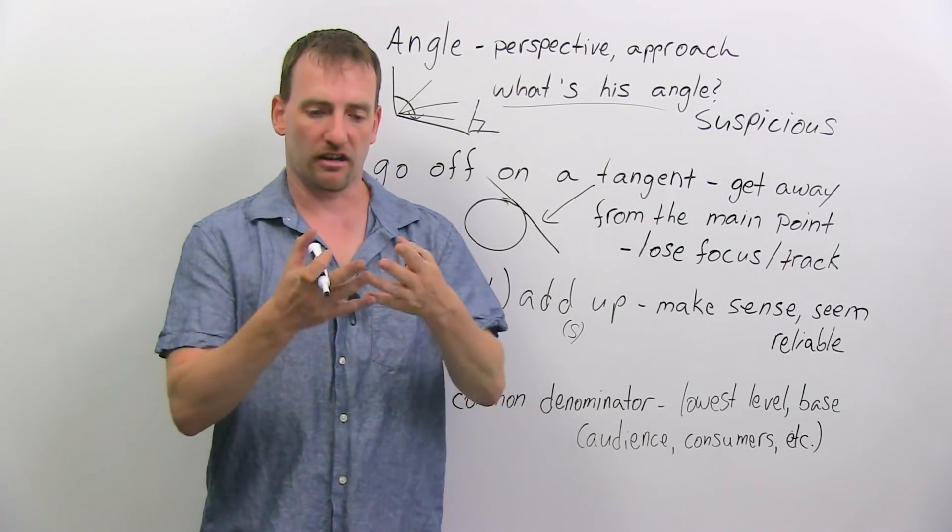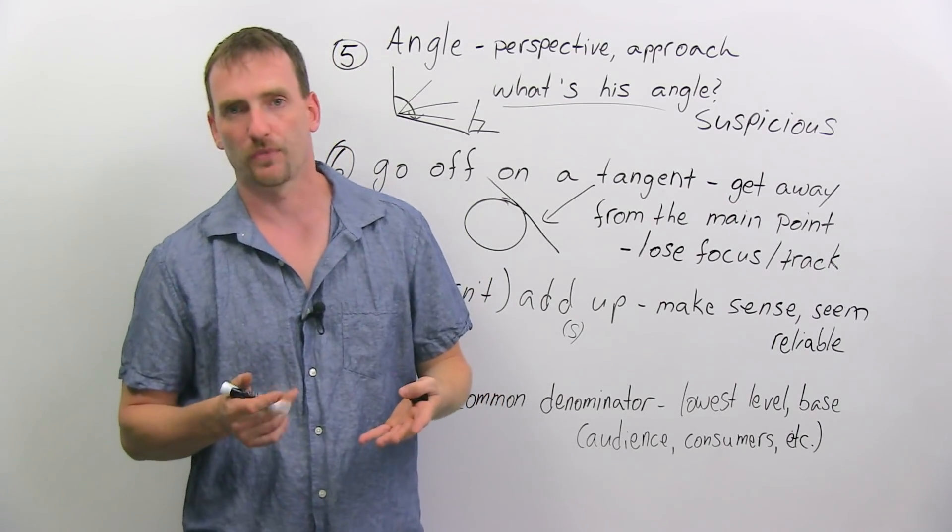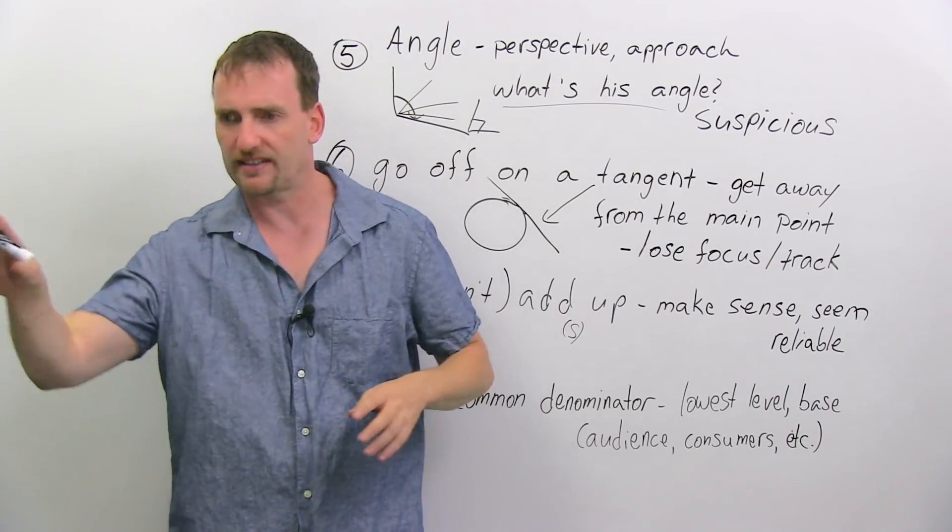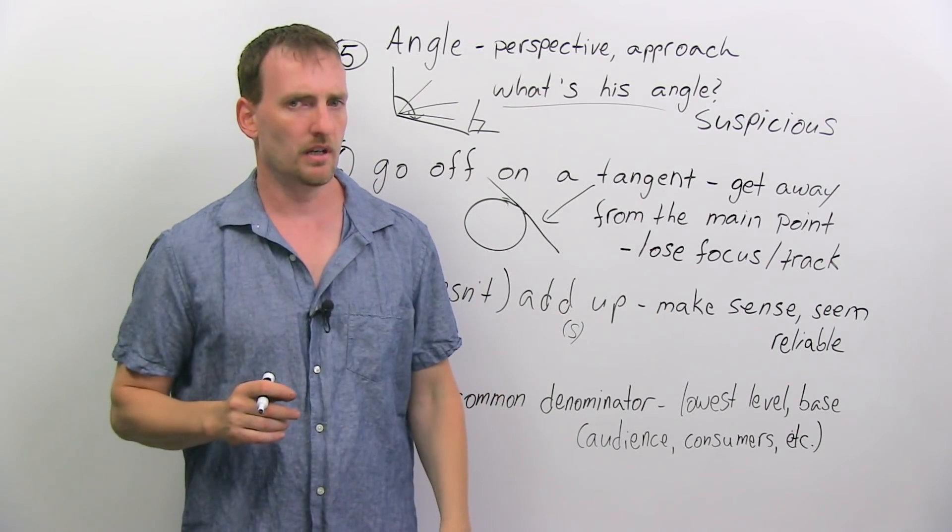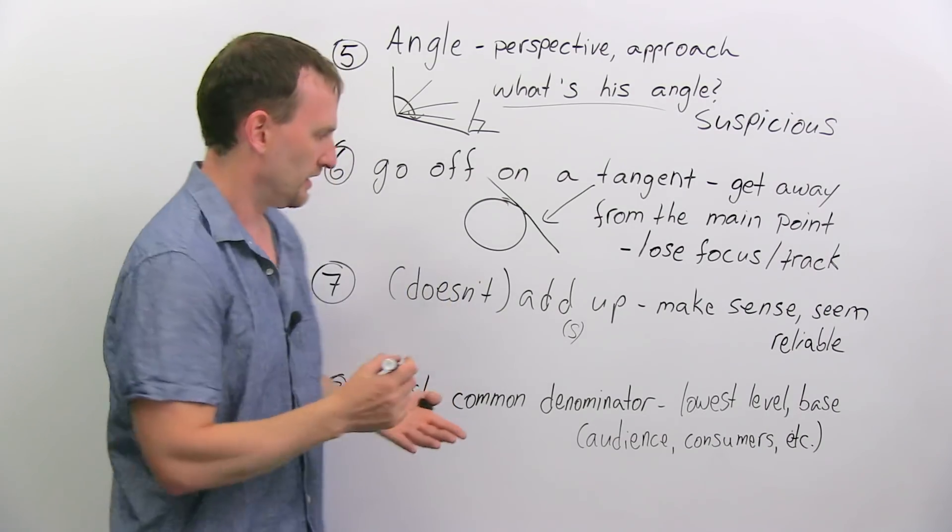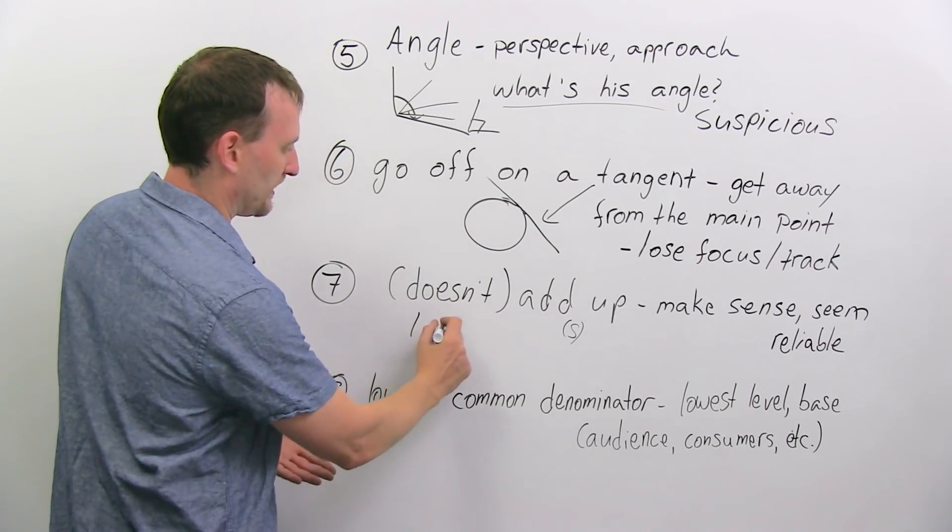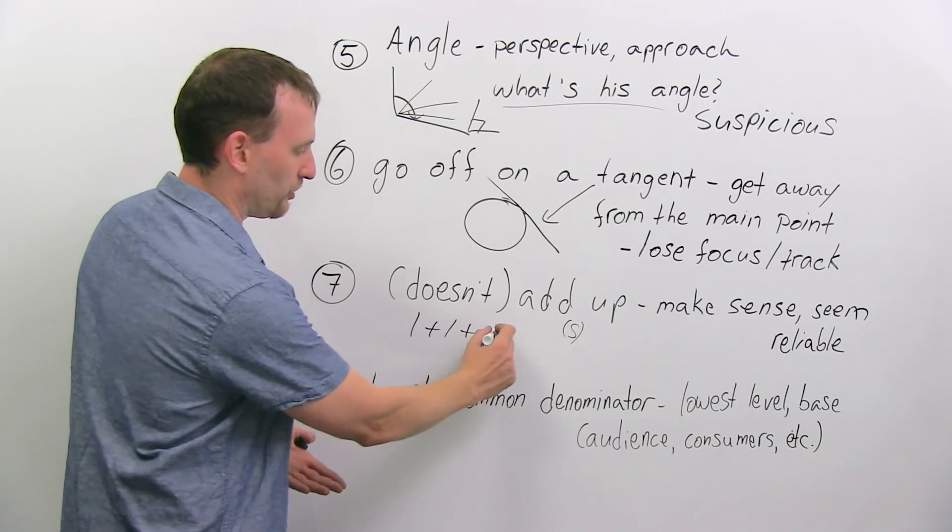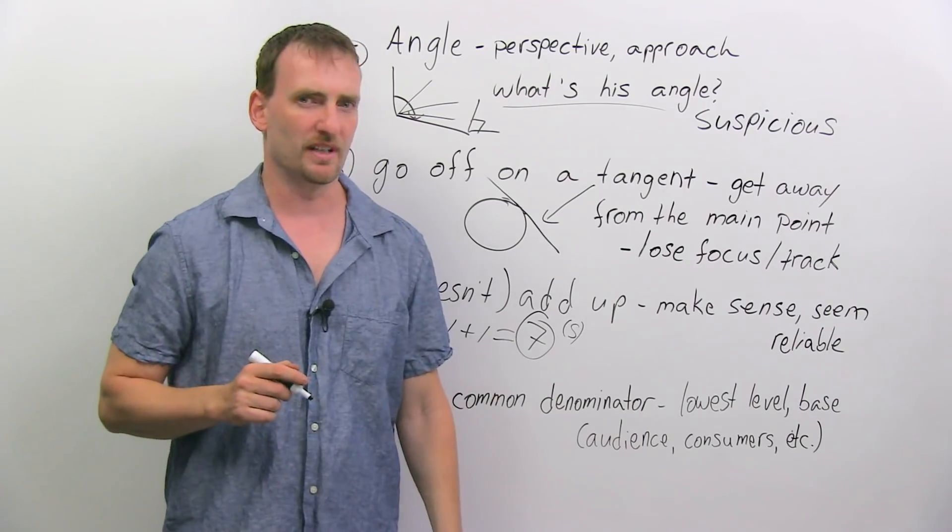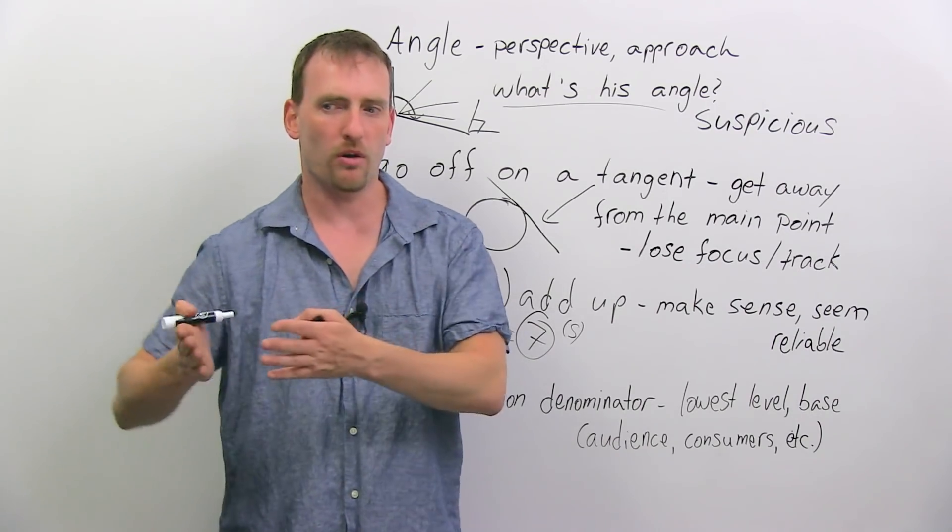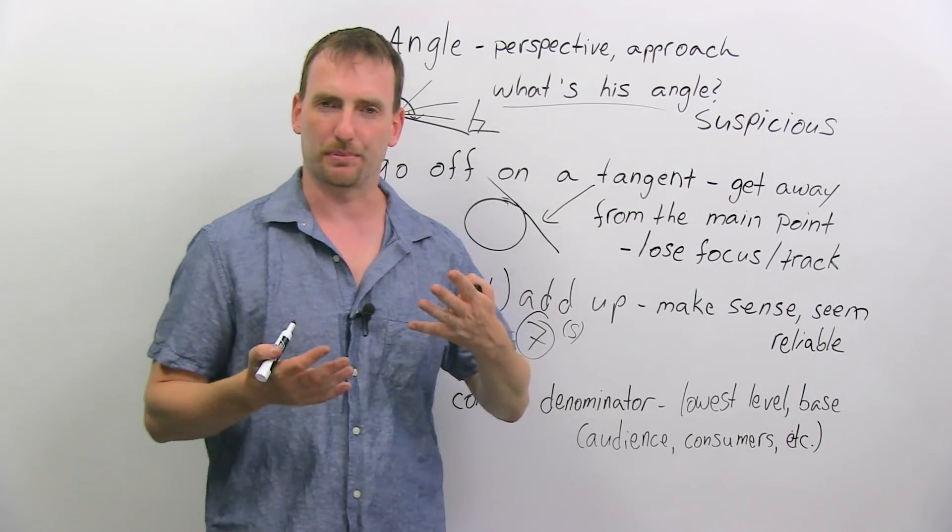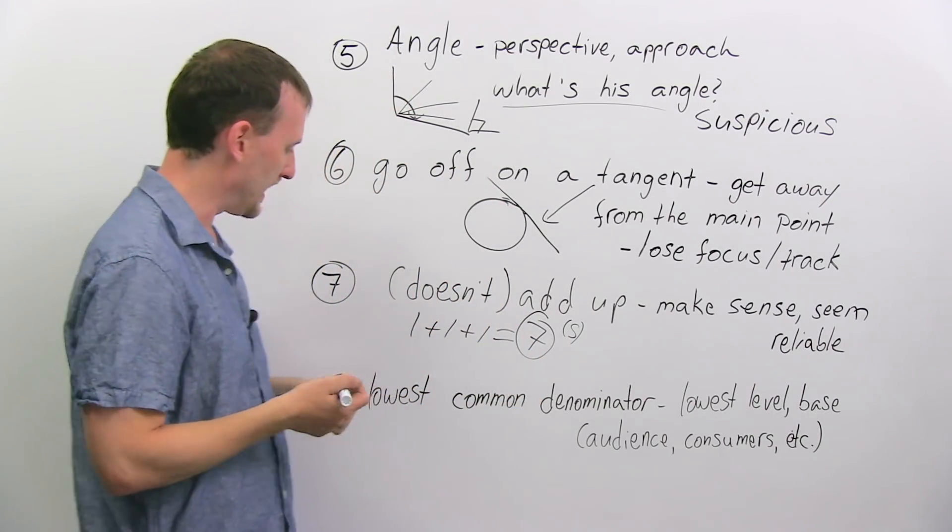or they're interviewing a suspect, and the suspect or the witness are saying, oh, this happened, and this happened, and the police are going, hmm, this doesn't add up. So this part of the story plus this part of the story plus this part of the story does not equal this part of the story. Something doesn't add up. Either you're lying, or you missed something, or we missed something in the questions. So it doesn't add up. It doesn't make sense.